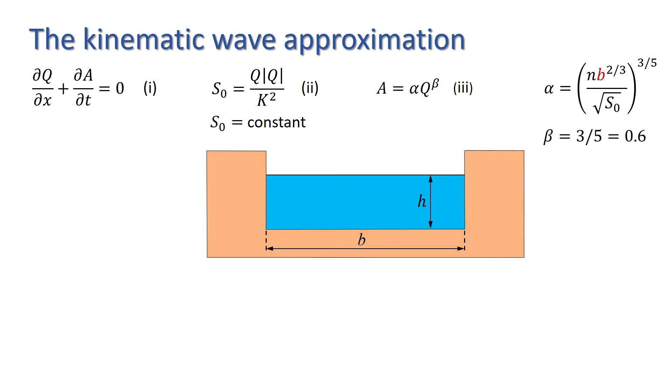Next, we note that by applying the chain rule to dA by dt, we can rewrite equation one in the form dQ/dx plus dA/dQ dQ/dt equals zero. This is useful because we can obtain an expression for dA/dQ by differentiating equation three with respect to Q, giving us dA/dQ equals αβ Q to the β minus one.